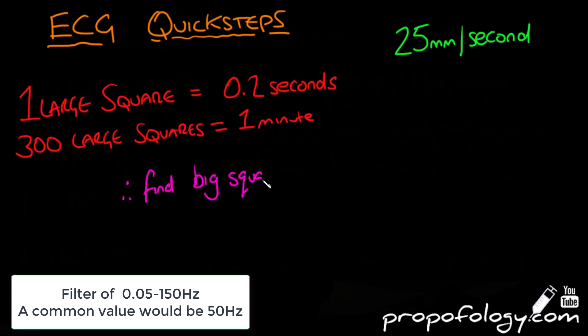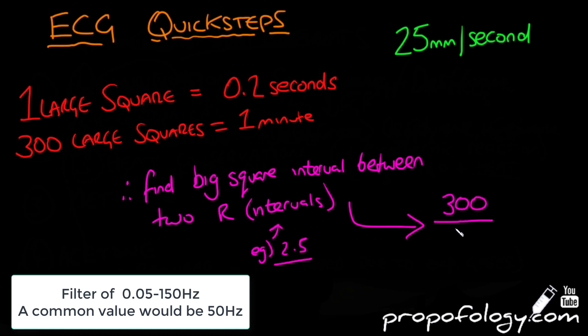You find a big square interval between two R to R intervals. So for example, if you have two and a half big squares between two R to R intervals in the QRS complex, you take 300 and divide by 2.5 and you will have 120, and that's your beats per minute.